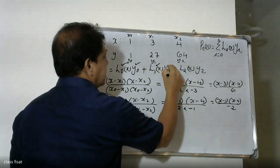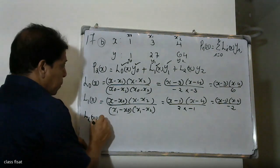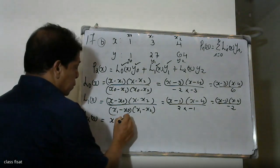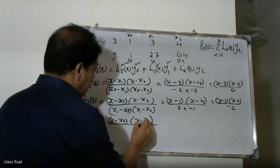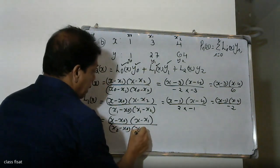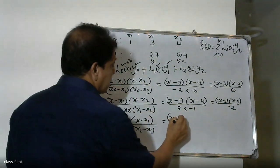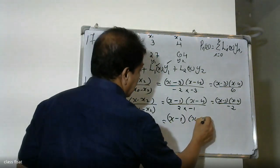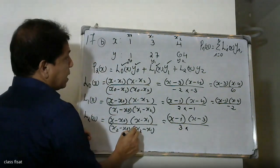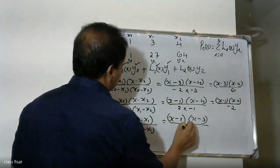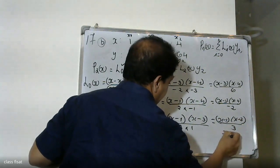For L1(x), the numerator is x minus x0 times x minus x2. The denominator is x1 minus x0 times x1 minus x2, which is 3 minus 1 times 3 minus 4 = 2 times minus 1 = minus 2. For L2(x), the numerator is x minus x0 times x minus x1, giving (x − 1)(x − 3) divided by 3.